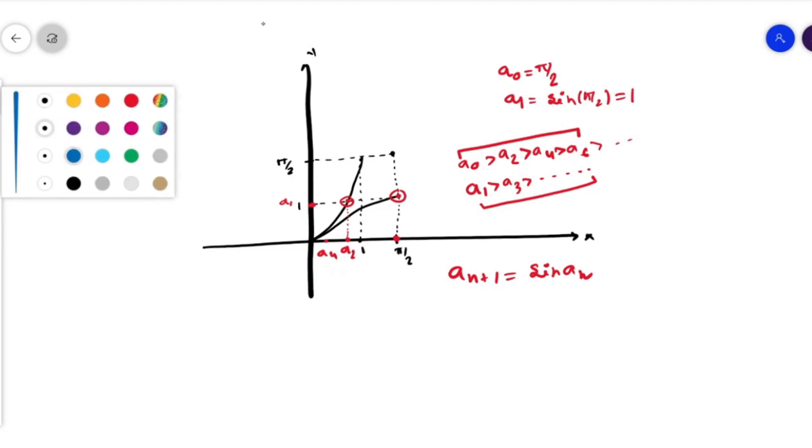We have given that a_{n+1} = sin(a_n). Now if we use the Taylor expansion, then we can write as: a_n - a_n³/3! + a_n⁵/5! - ... and this goes on.